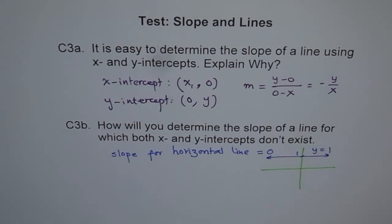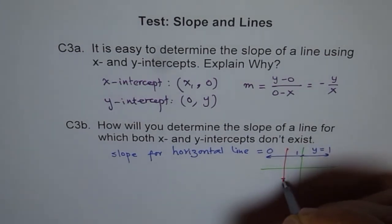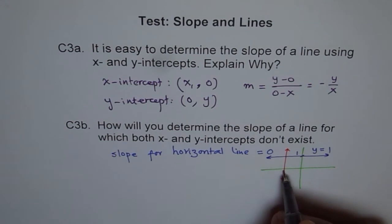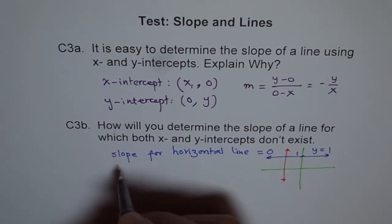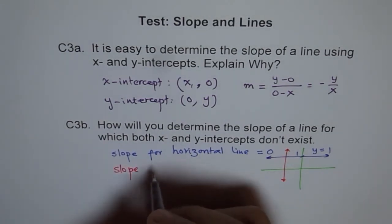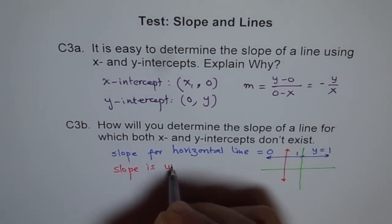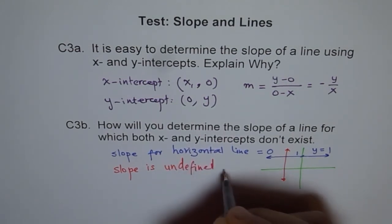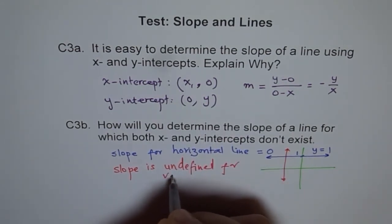And if we have a vertical line, in that case, it will not have any y-intercept. It will have x-intercept only, right? So in such case, slope is, how much? Undefined for vertical line.